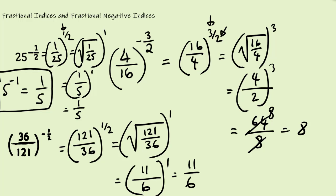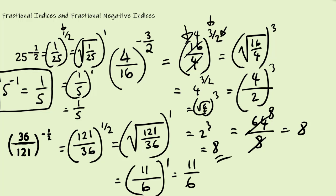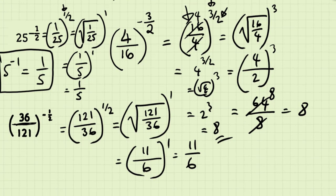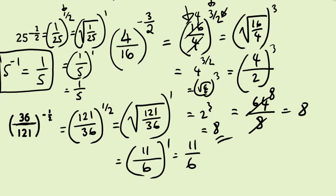We can simplify 64 over 8 — 8 goes into 64 eight times, so the answer is 8. We could also have simplified earlier: at the start, 4 goes into 16 four times, leaving just 4 to the power of 3 over 2. Square root of 4 is 2, and 2 cubed is 8. Always look for ways to simplify fractions to avoid difficult working. I hope this video helps — please subscribe, and in the next video we'll look at exam-style questions on fractional and fractional negative indices. Mr. Mahmood, helping you do better in maths.